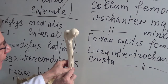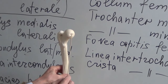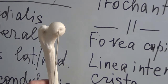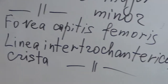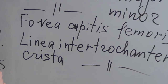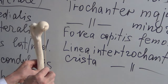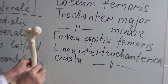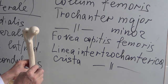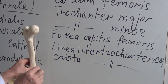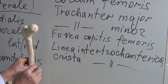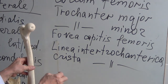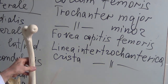I'd also like to demonstrate this small fovea — the fovea capitis femoris. It serves for connection with a special ligament placed inside the hip joint, the ligamentum capitis femoris, which connects to this fovea capitis femoris.